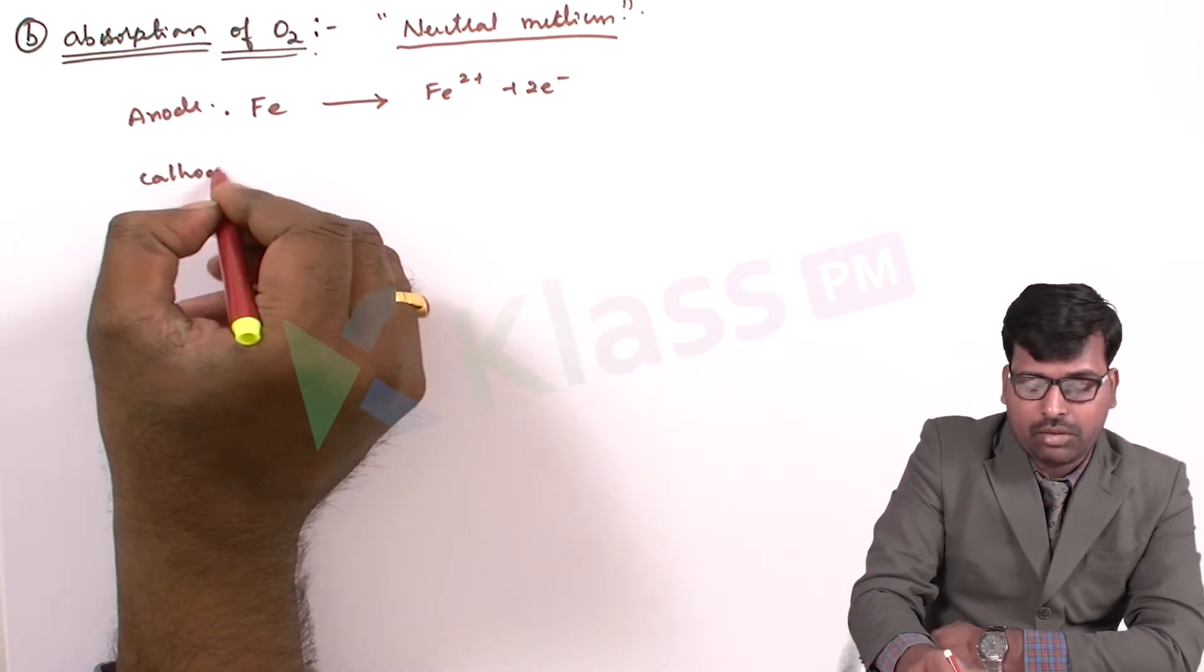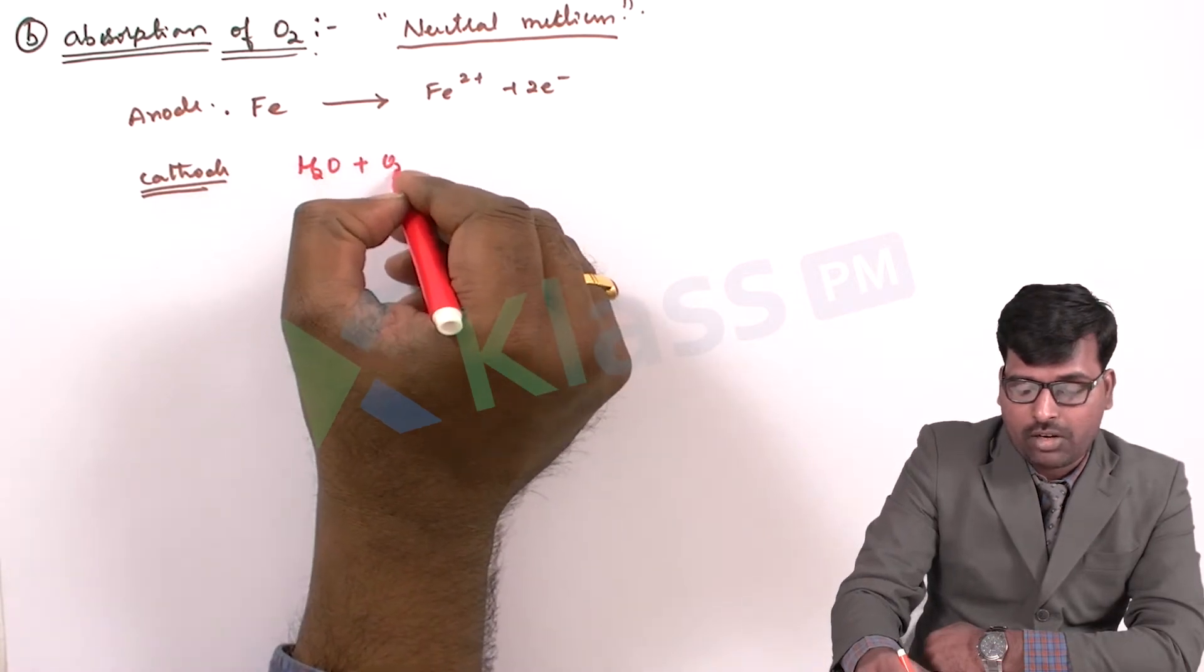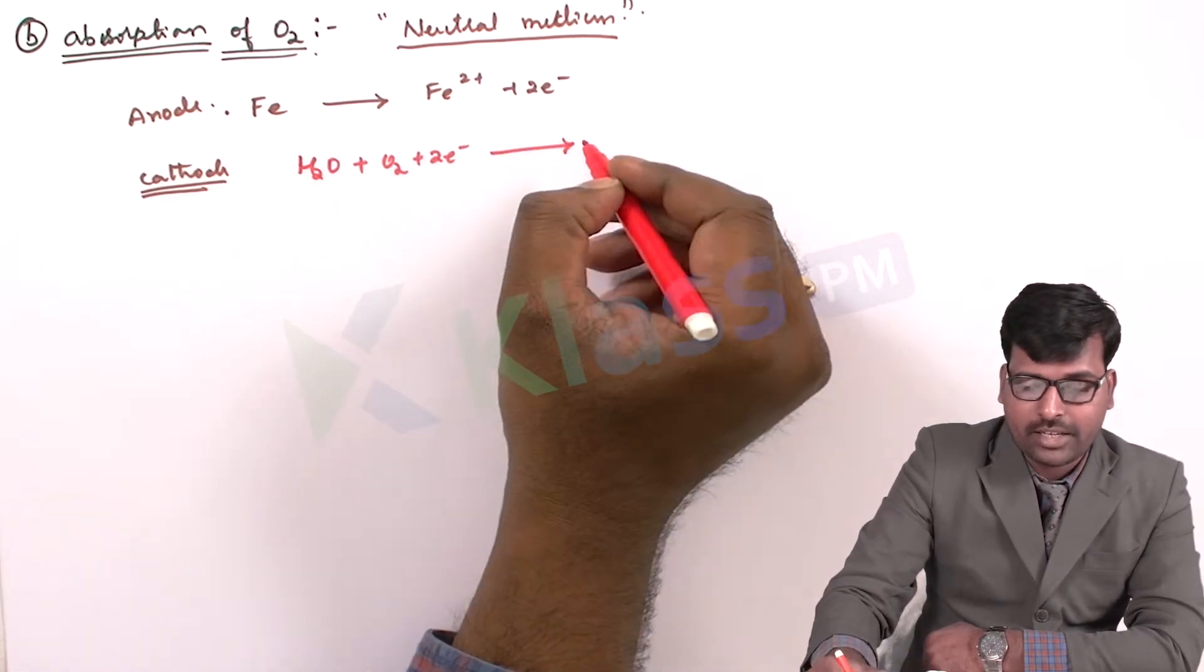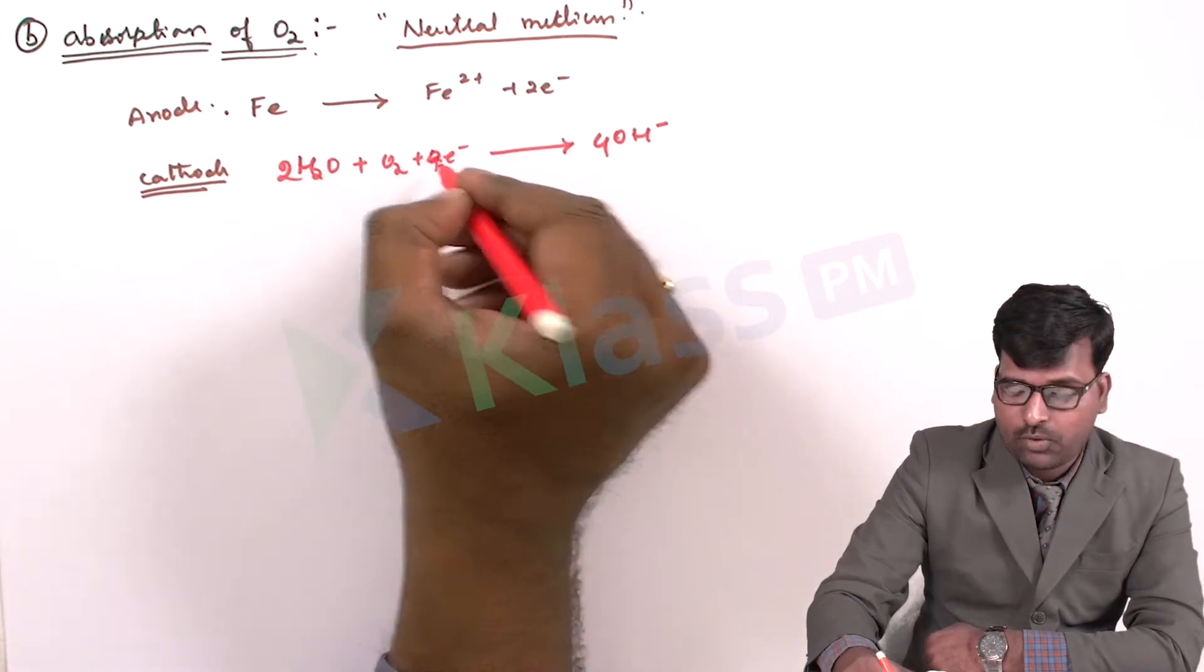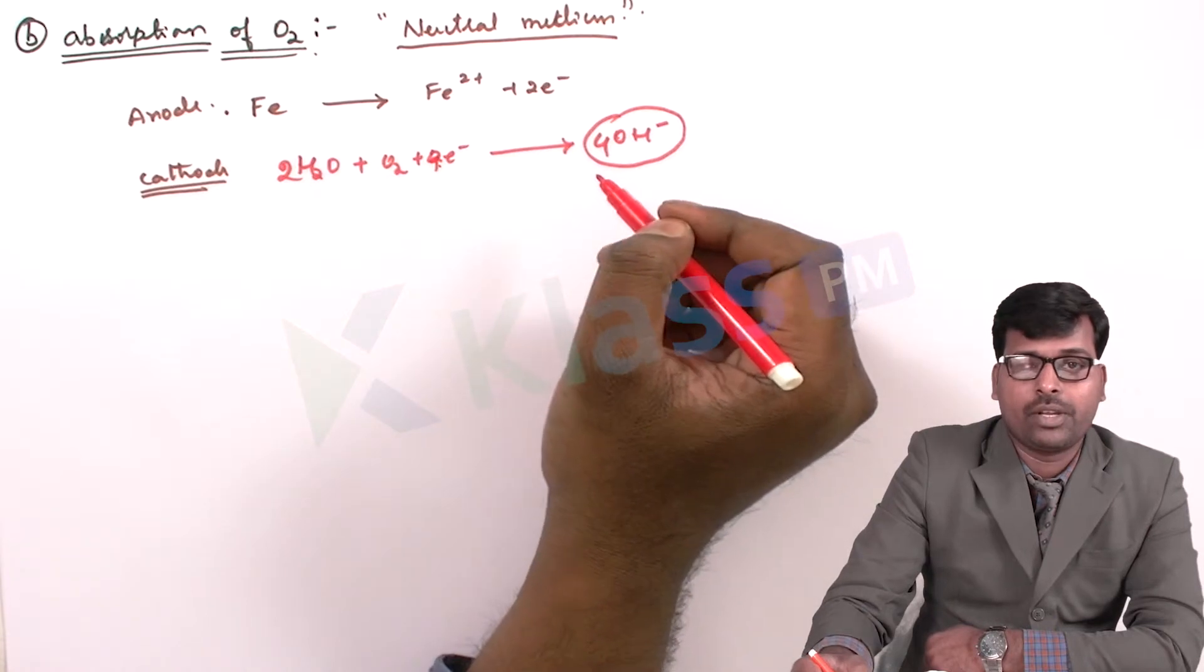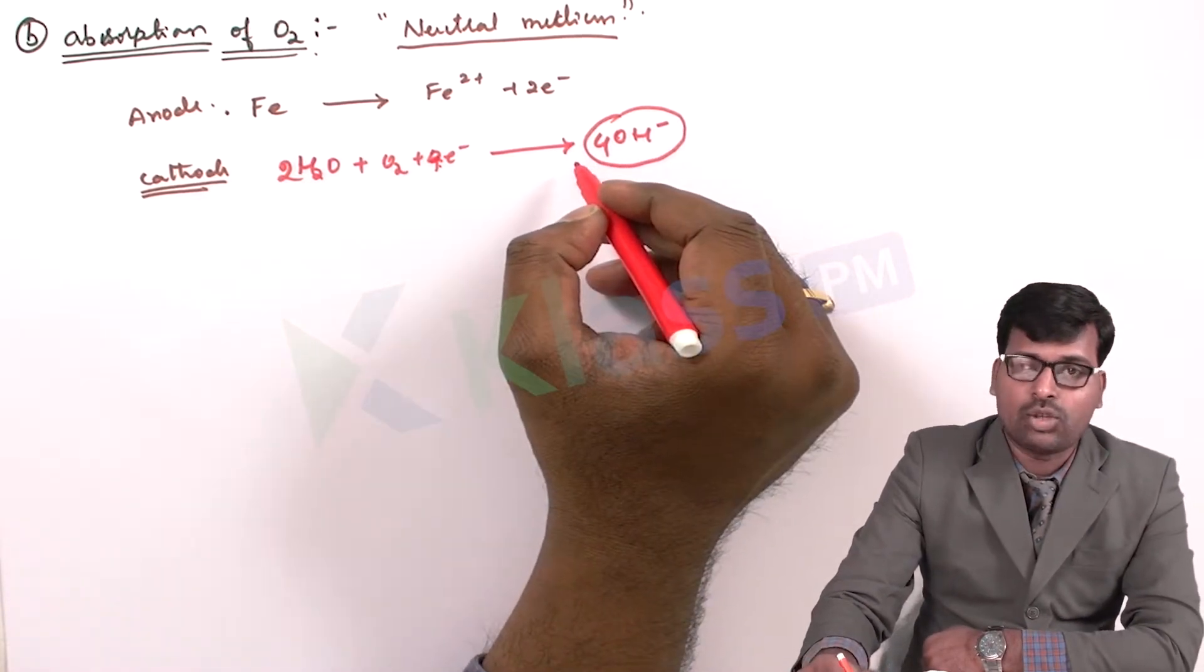And at cathode, the water is utilized along with the oxygen and along with the two electrons. And thus it forms the OH- ions. Yeah, this is four electrons and four OH- are formed. So clearly the OH- ions are formed at cathode itself.